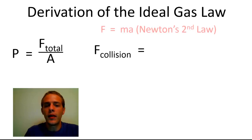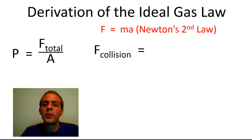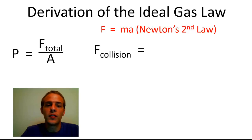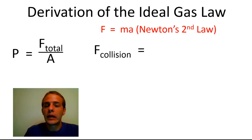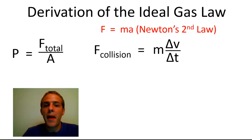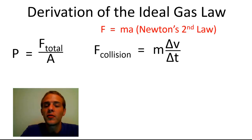To do this, we're going to rely on our good friend Isaac Newton. Newton's Second Law states that the force exerted by a particle is equal to the mass of that particle times its acceleration. We're going to apply that second law to get an expression for the force of each individual collision: force equals mass times acceleration. We can rewrite the acceleration term as Δv over Δt — the change in velocity divided by the change in time — where lowercase v is velocity, not volume.